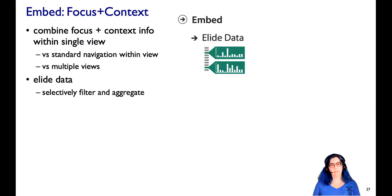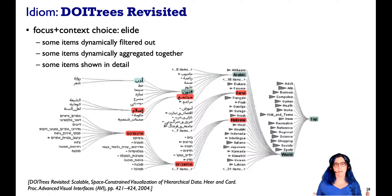So let's take a look at some of the major strategies. One is what we're going to call elision or eliding data, where we selectively filter and aggregate. An example, DOI trees, is a lot like the space trees examples I showed way back in the initial segment on visualization. So let's look at this again through these eyes.